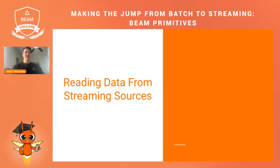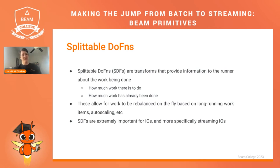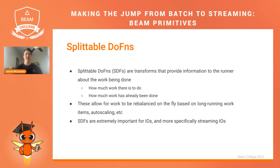Reading data from streaming sources is a little different than reading data from bounded sources. If you're familiar with Beam, you may have heard the term splittable DoFn, or SDFs. These are transforms that provide information to the runner about the work being done — usually the two key things being how much work there is to do and how much work has already been done. These allow for splitting that work, which is why they have their name. The idea is that you can rebalance your work on the fly if things are taking too long, or if you need to scale up.